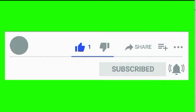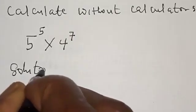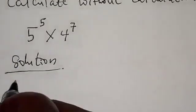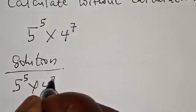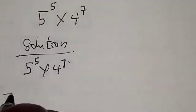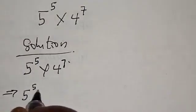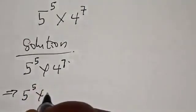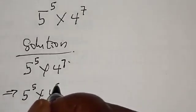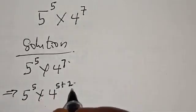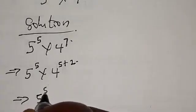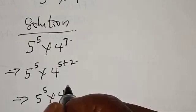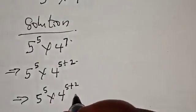Solution: we have 5 raised to power 5 multiplied by 4 raised to power 7. This can be expressed as 5 raised to power 5 multiplied by 4 raised to power 5 plus 2, since 5 plus 2 equals 7. So this implies that we have 5 raised to power 5 multiplied by 4 raised to power 5 plus 2.